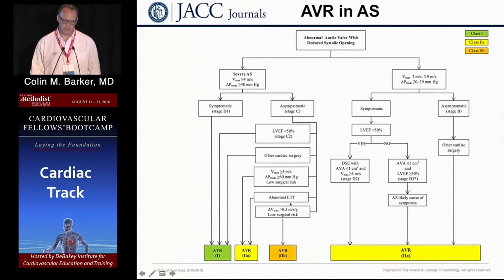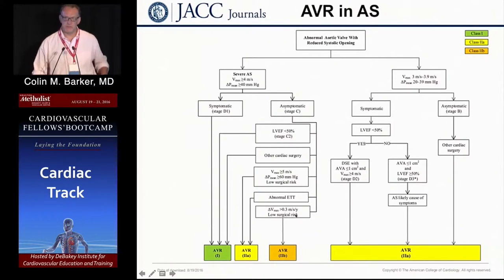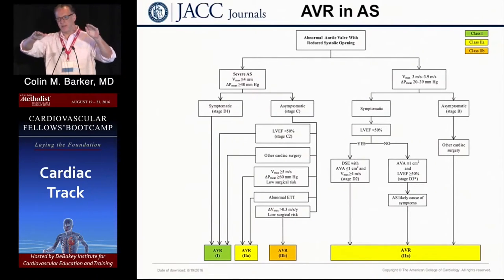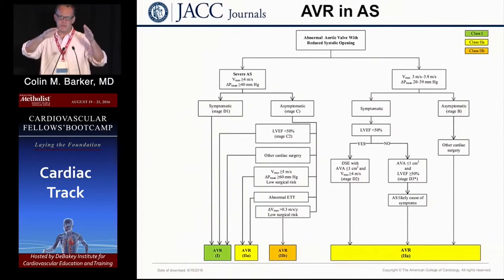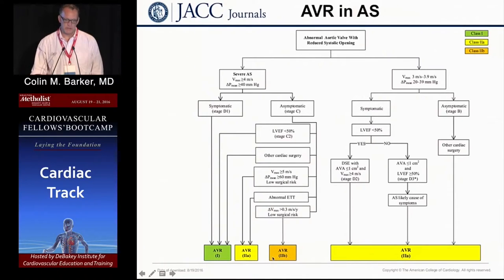Sometimes it's challenging to tease out whether someone is truly symptomatic. We can put them on a treadmill, and if they have an abnormal exercise stress test it's reasonable to get a new valve. Finally, if the change in V-max is greater than 0.3 meters per second per year — meaning the disease is progressing rapidly — we tell patients the disease doesn't progress linearly; it plateaus, then worsens. That's why we follow people every six months. If disease is acting up and progressing rapidly, it's reasonable to intervene.